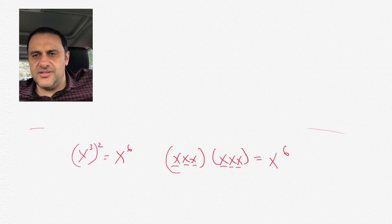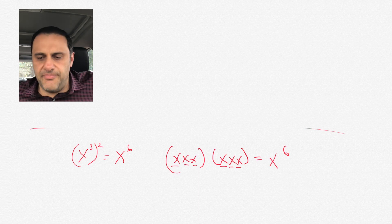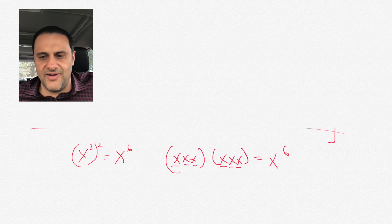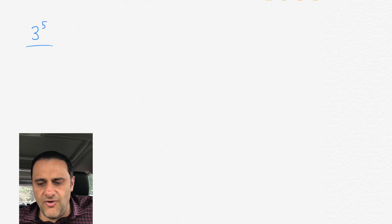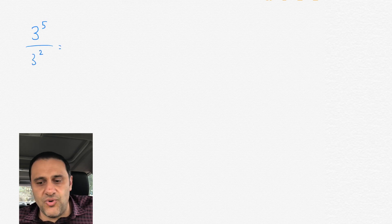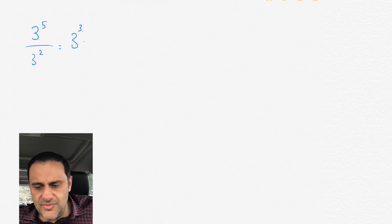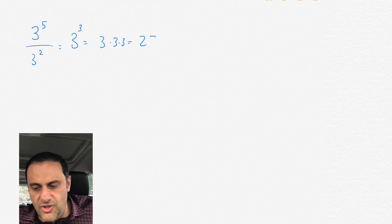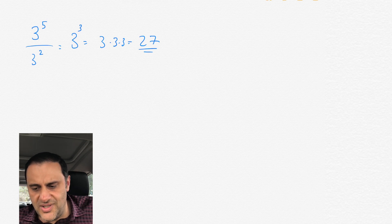Now, this works as long as the base is all the same. So everything we've been doing is like x cubed over x squared. If you have something like 3 to the 5 over 3 to the 2, same principle — because the base is the same, which is 3, you could just subtract 5 by 2 and you get 3 cubed. 3 cubed is like 3 times 3 times 3, which is 27.